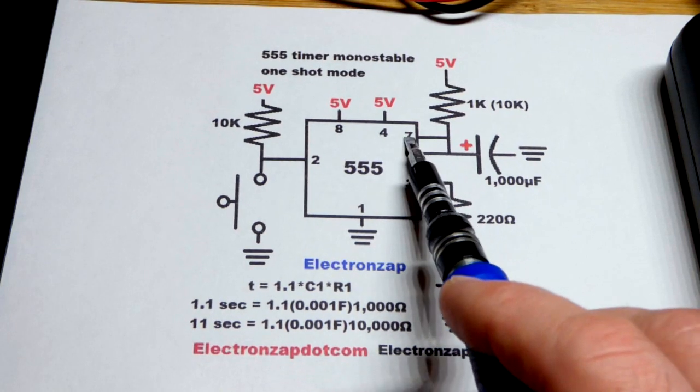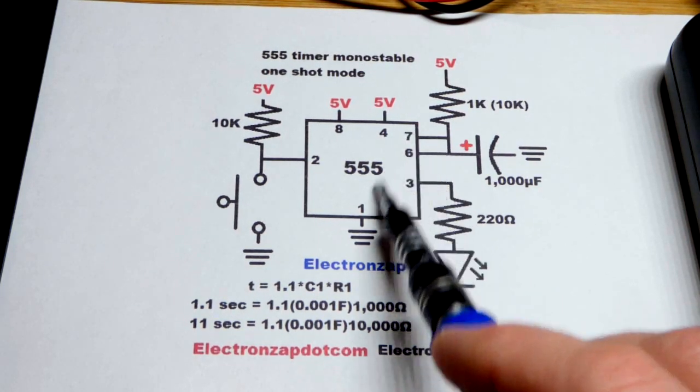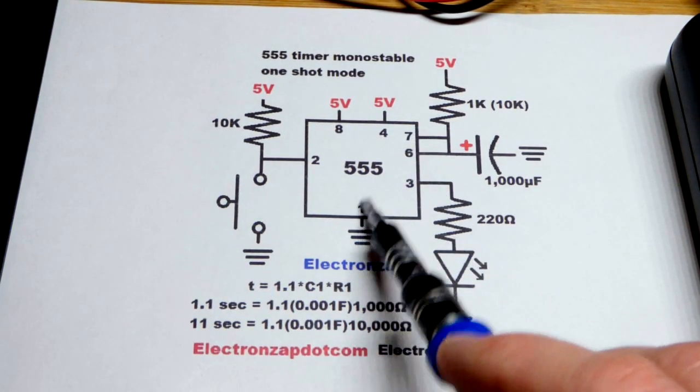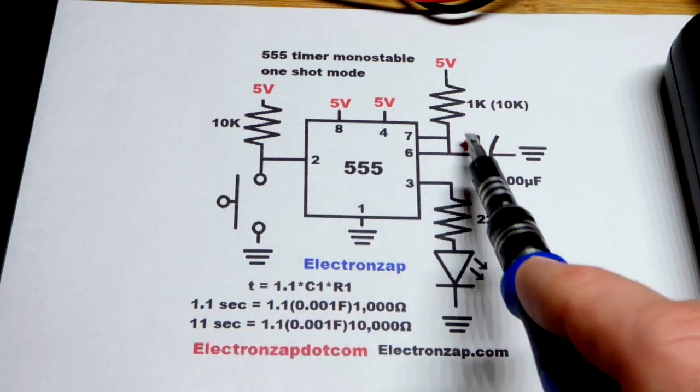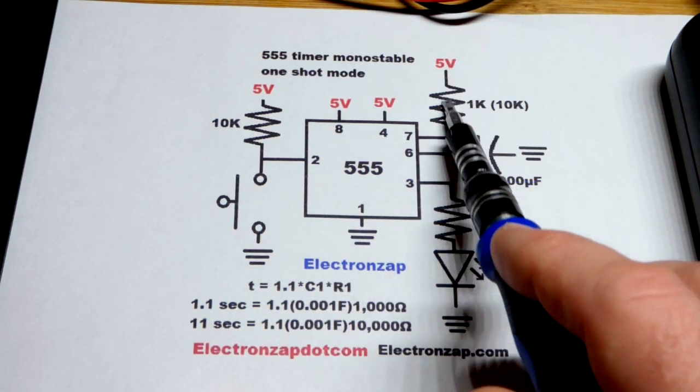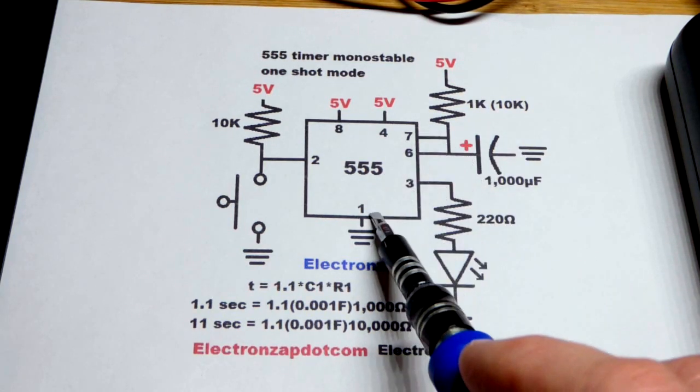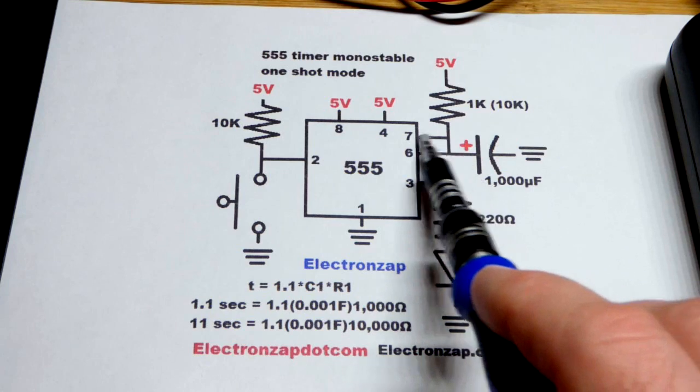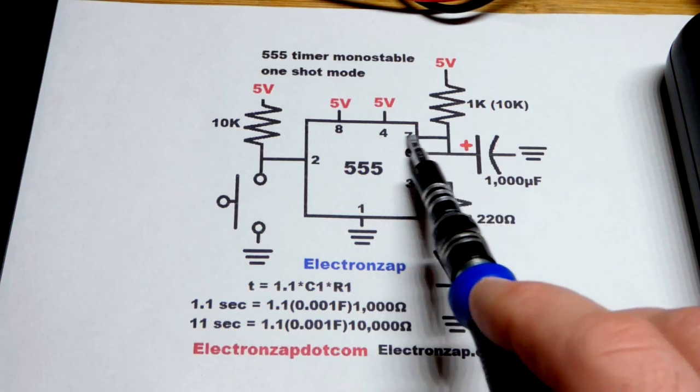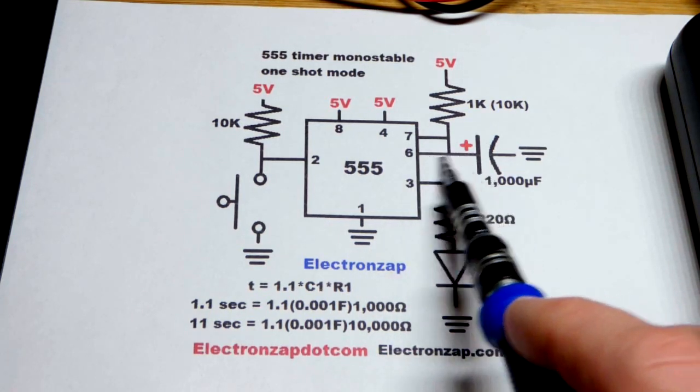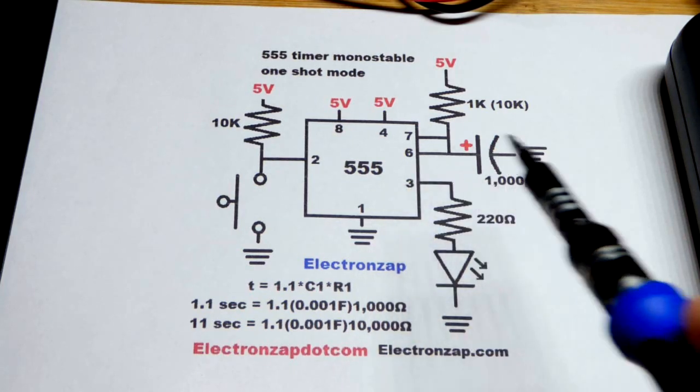Pin 7 internally is also connected directly to ground to begin with before we press the switch. You can see we have a current path through that resistor. It won't charge the capacitor, it will go directly to ground. We got ground on both sides of the capacitor. That's the discharge pin, pin 7. Pin 6 is the threshold pin, but we'll get to that coming up.